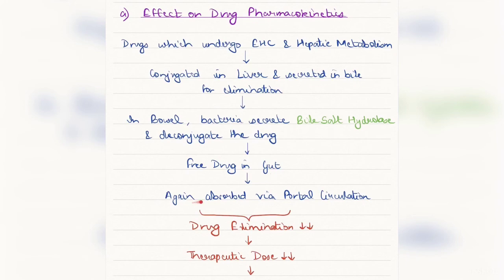This actually forms more free drug in the gut. This free drug actually gets again absorbed by the portal circulation back to the liver. This ultimately increases the drug bioavailability. Also, it decreases the drug elimination. This helps us in reducing the therapeutic dose of the drug, which ultimately would benefit us with reduced adverse effects of that particular drug.